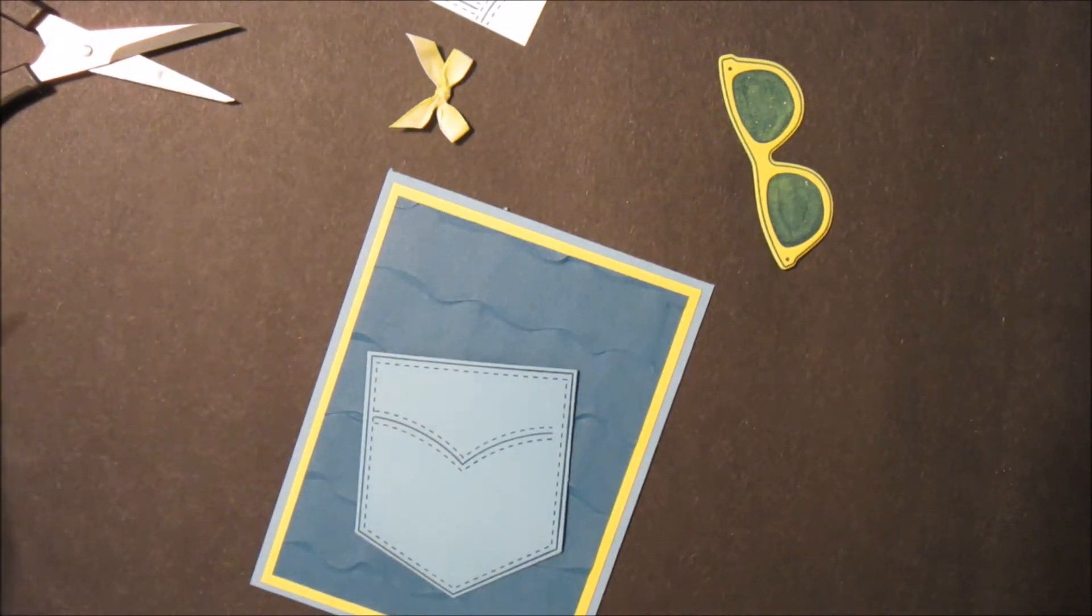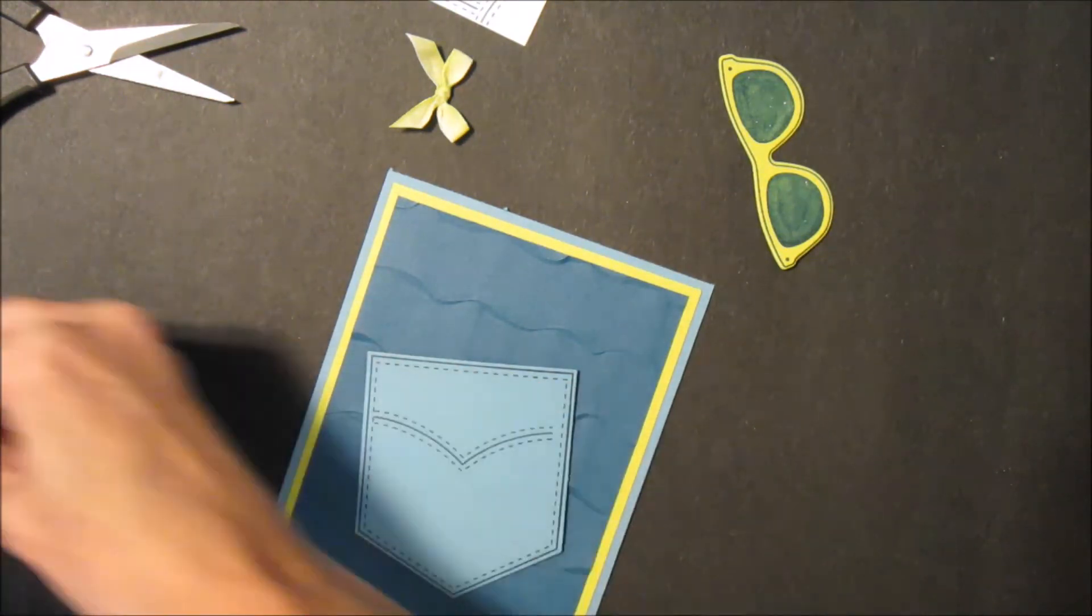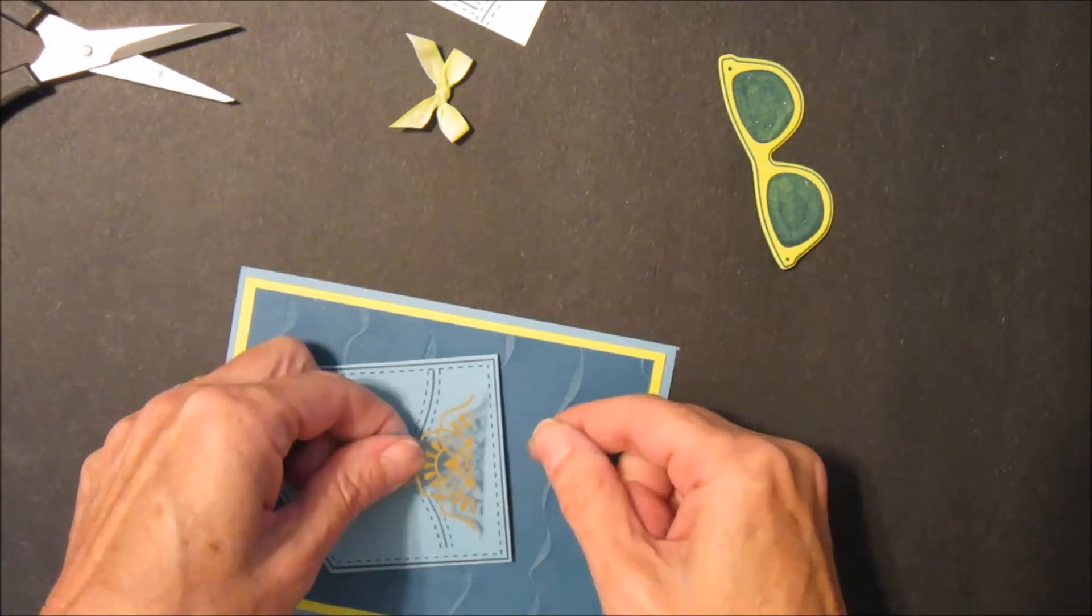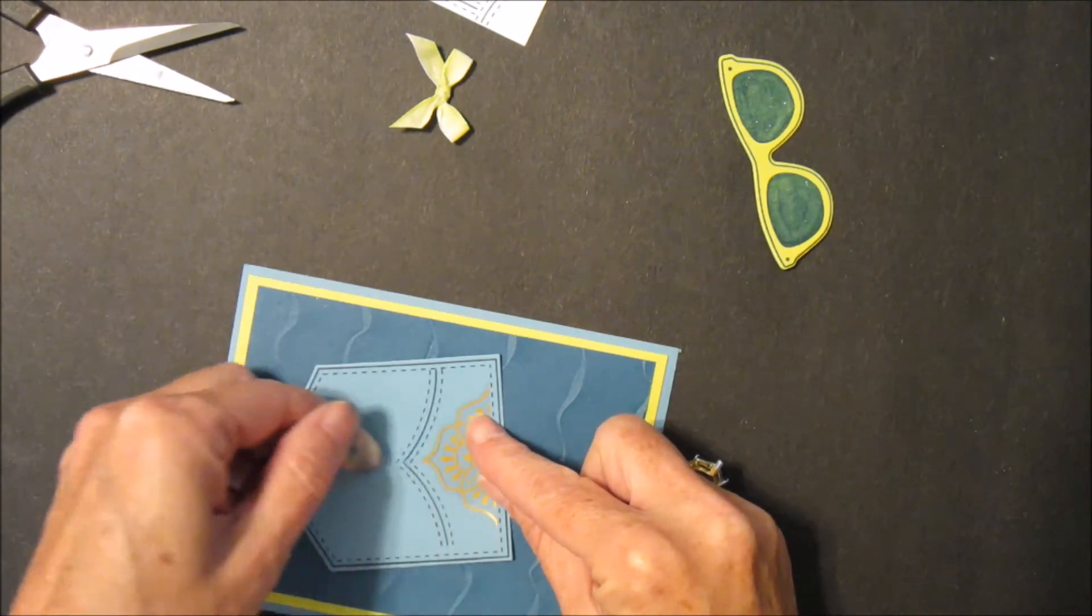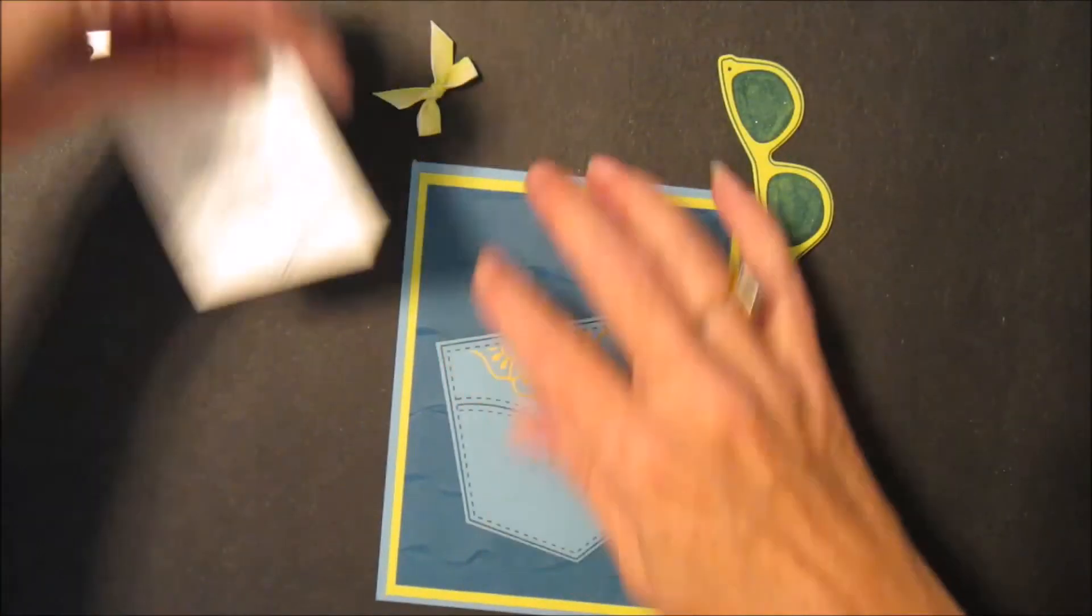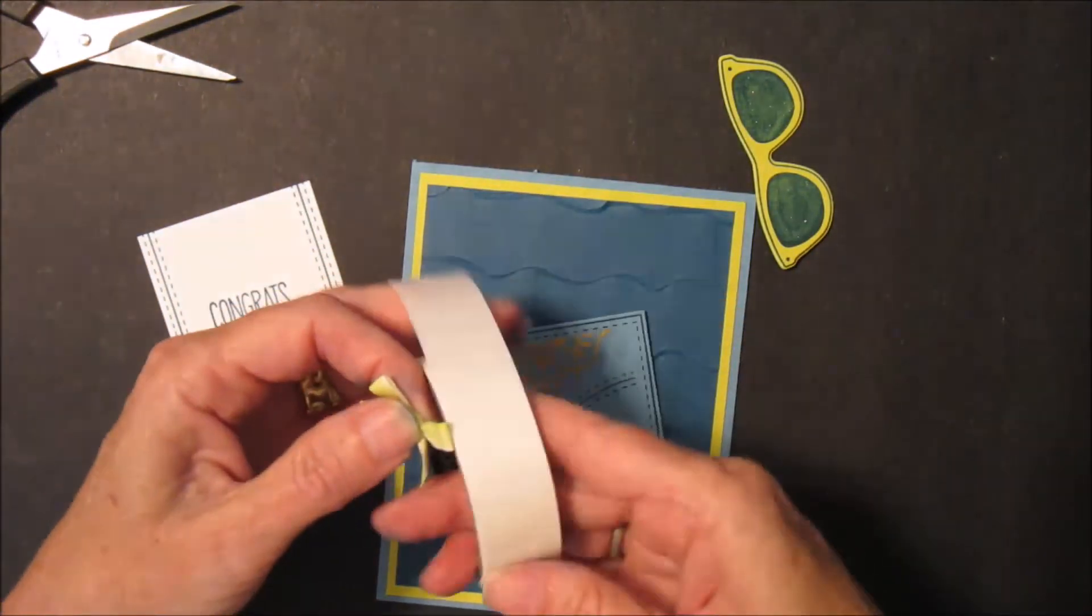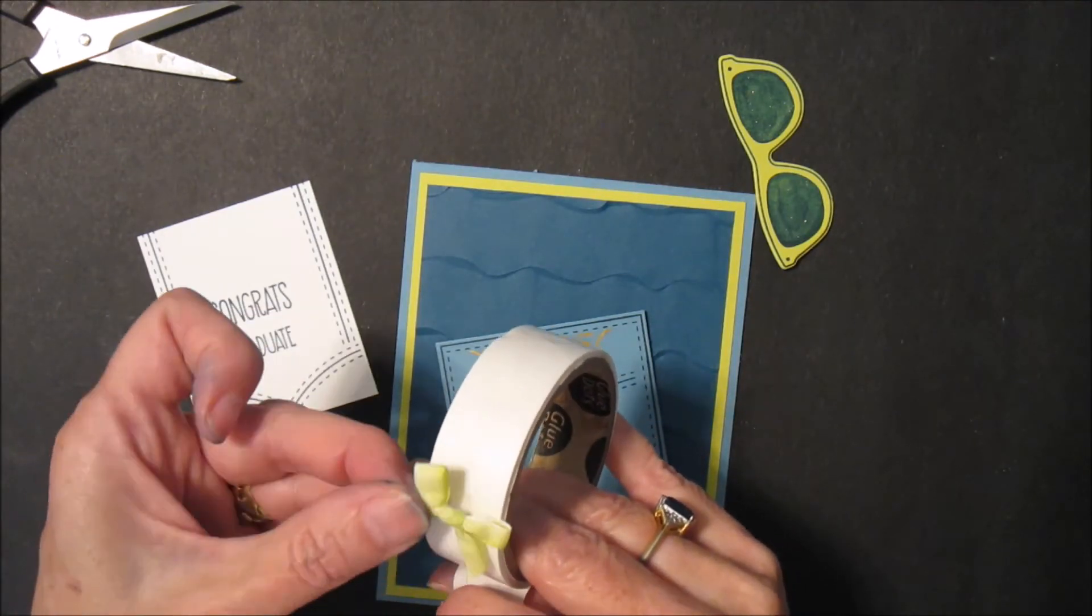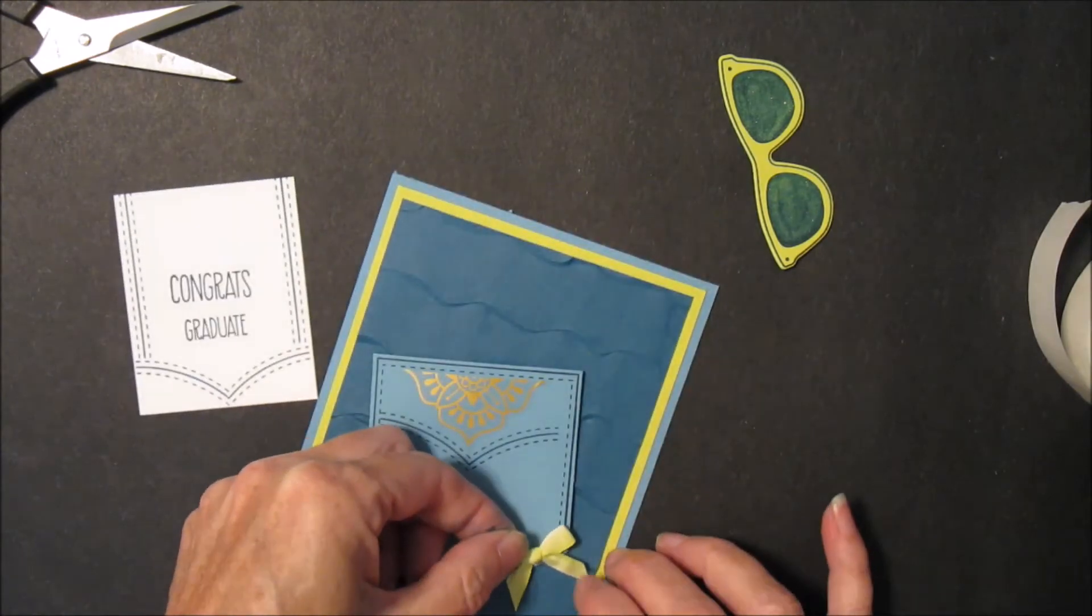Next we'll take our little sticker and put it on our pocket up here at the top. And take a little glue dot and put our bow at the bottom here.